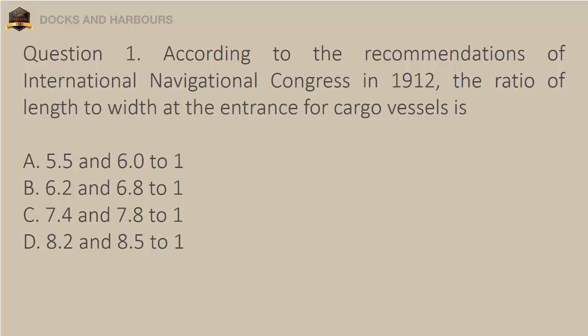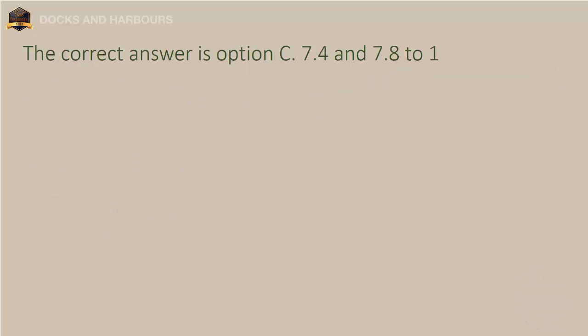Question 1. According to the recommendations of the International Navigational Congress in 1912, the ratio of length to width at the entrance for cargo vessels is: a. 5.5 and 6.0 to 1, b. 6.2 and 6.8 to 1, c. 7.4 and 7.8 to 1, d. 8.2 and 8.5 to 1. The correct answer is option C: 7.4 and 7.8 to 1.